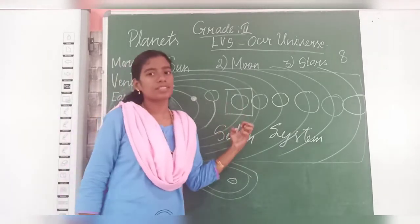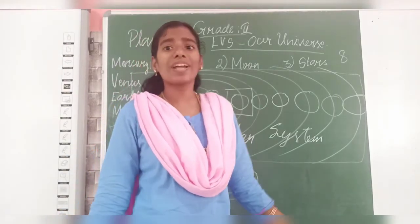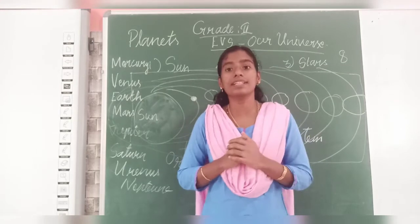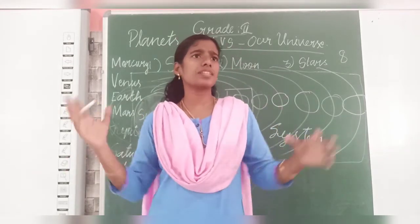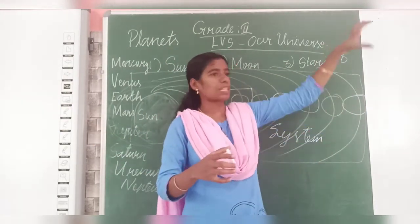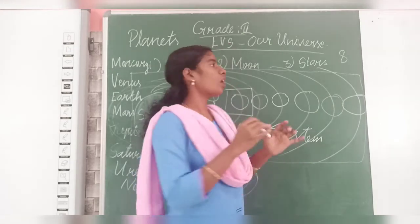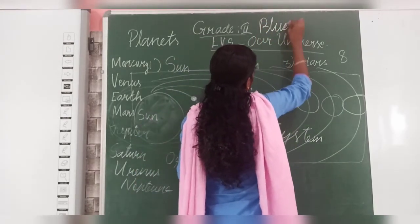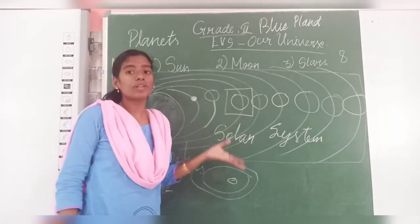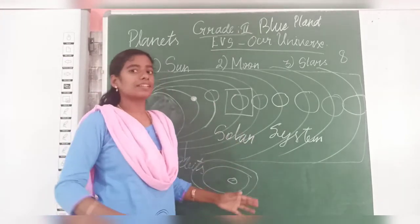Earth is the third planet from the sun. When you look at the solar system and see the Earth, it will appear in blue color. Why is it blue? Because Earth has plenty of water. Many places are surrounded by oceans and seas. So when you look from other planets, Earth will appear blue — it is also called the blue planet. All humans and animals are living on this Earth.